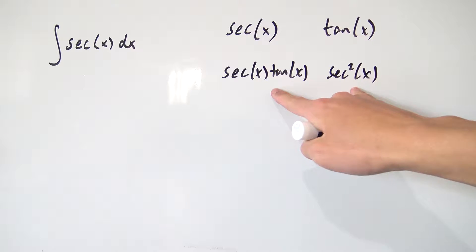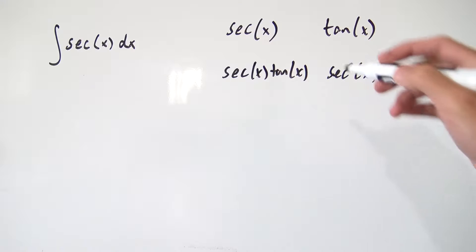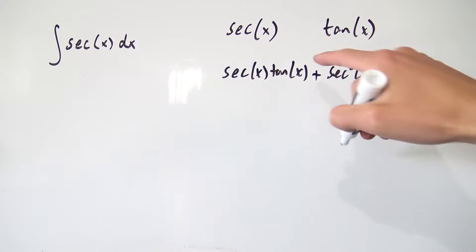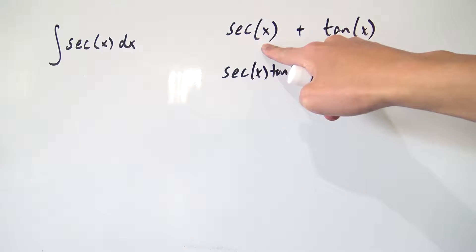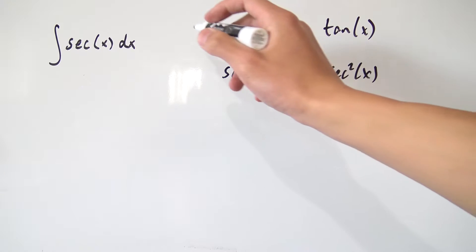And notice one cool thing about these two derivatives right here. They both have a common factor of secant of x. So it would be nice if we can kind of factor that out somehow. But in order to factor things, we need these two things to be added together. So why not just add them together? And if we add this, why not add the top as well? So this line right here is the derivative of the top line right here.